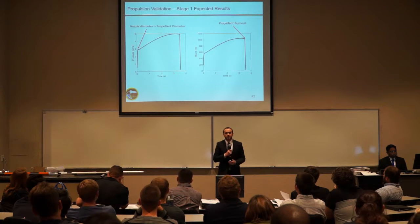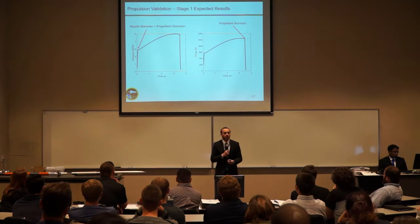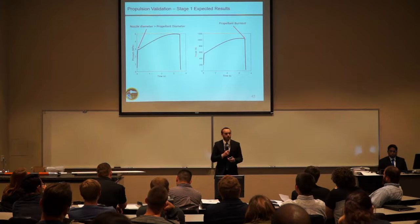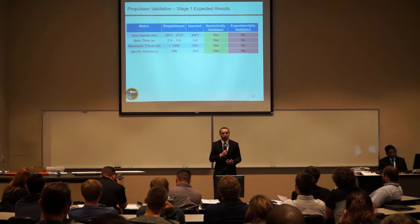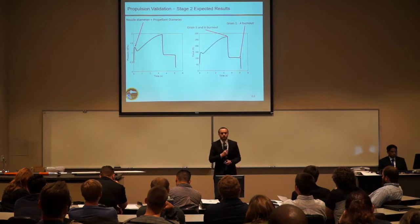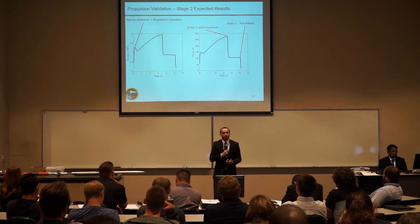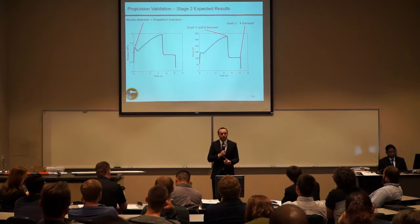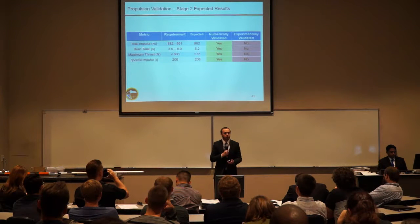The expected results for Stage 1 show a small bump in chamber pressure at the beginning, caused by the inner diameter of the propellant being slightly smaller than the nozzle diameter at the start of the burn, and a drop-off at the end. While we weren't able to experimentally validate the motor, based on the data from the previous test, we are confident we would have been able to validate it. For Stage 2, there's also a spike at the beginning and a drop-off in the middle where two grains with larger inner diameters finish burning first, followed by the remaining four grains burning to completion. We are confident that if we had fired the motor, we would have been able to meet our objectives.